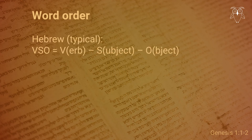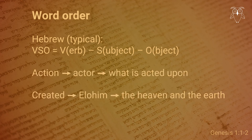In Hebrew, a common way to construct a sentence is VSO — verb, subject, object — meaning you start with the verb, in this case 'created,' followed by the subject or the one doing the act of creating, here Elohim, God, followed by the object or objects that are created, the heaven and the earth. All that to say, there is nothing in Genesis 1 verse 1 that is strange or surprising with regard to word order.